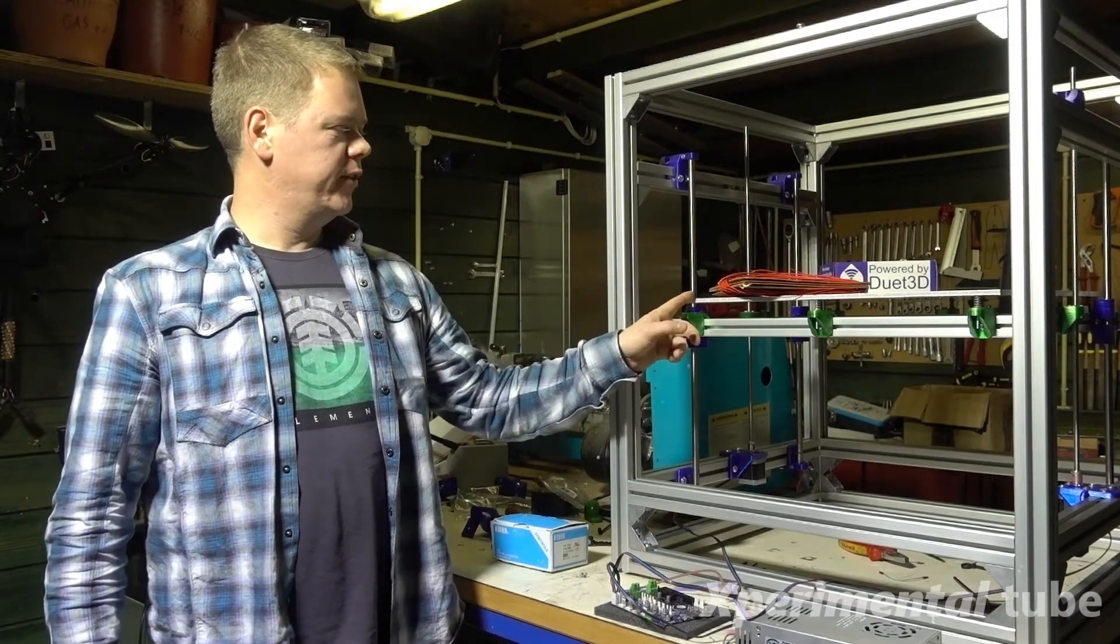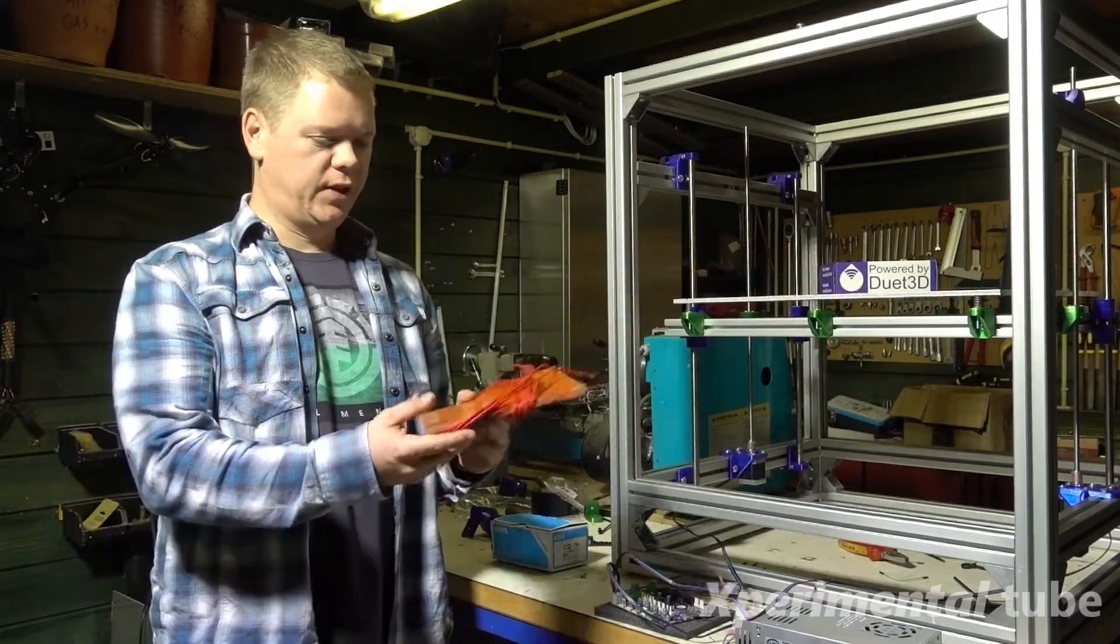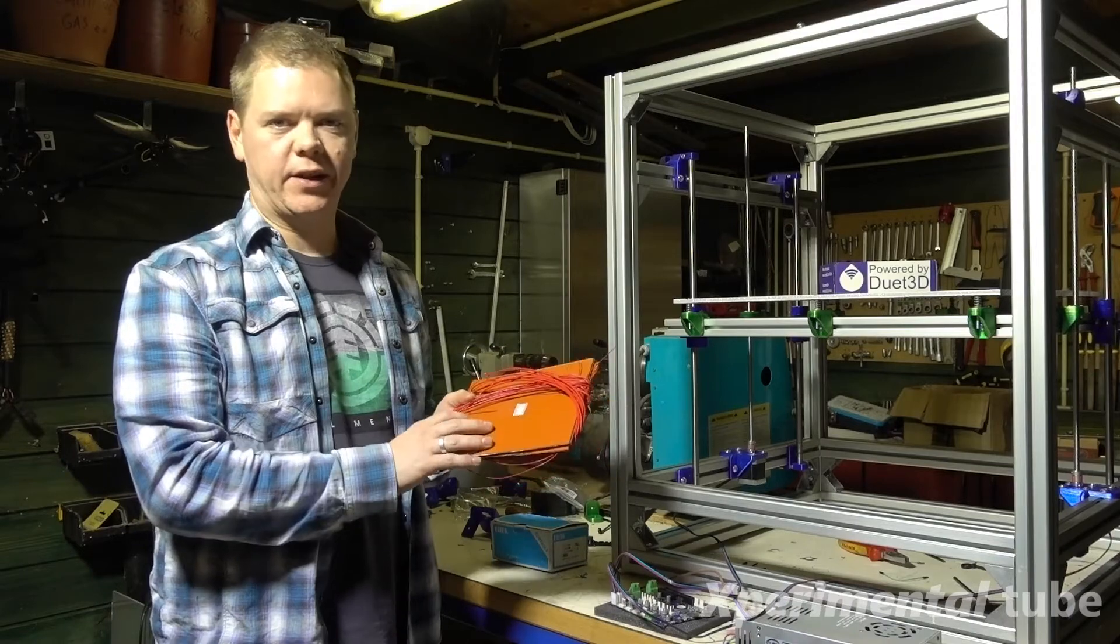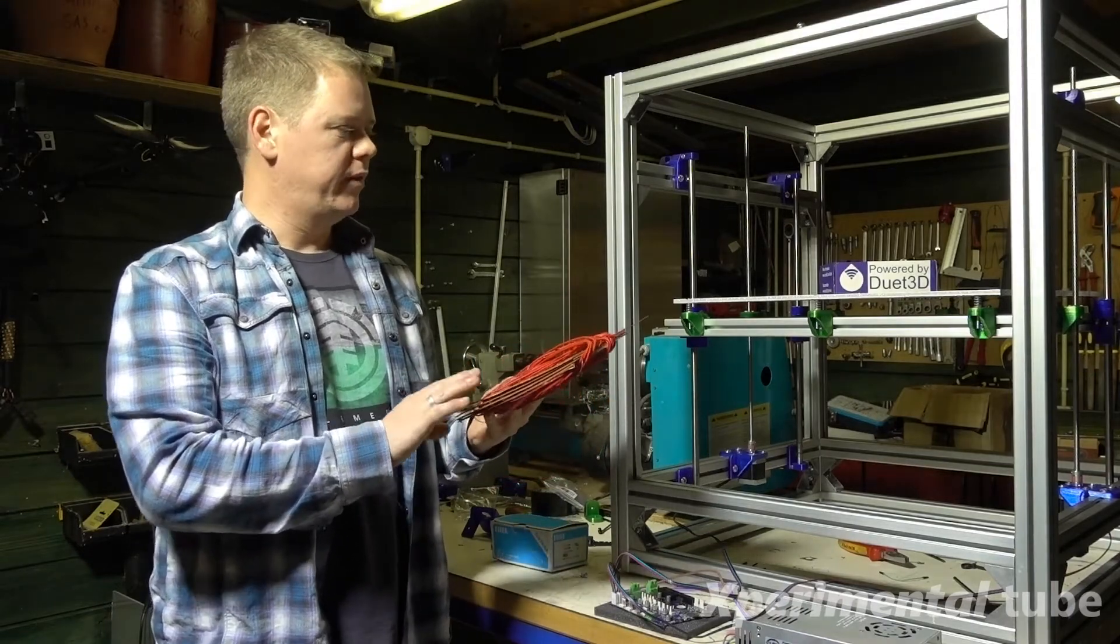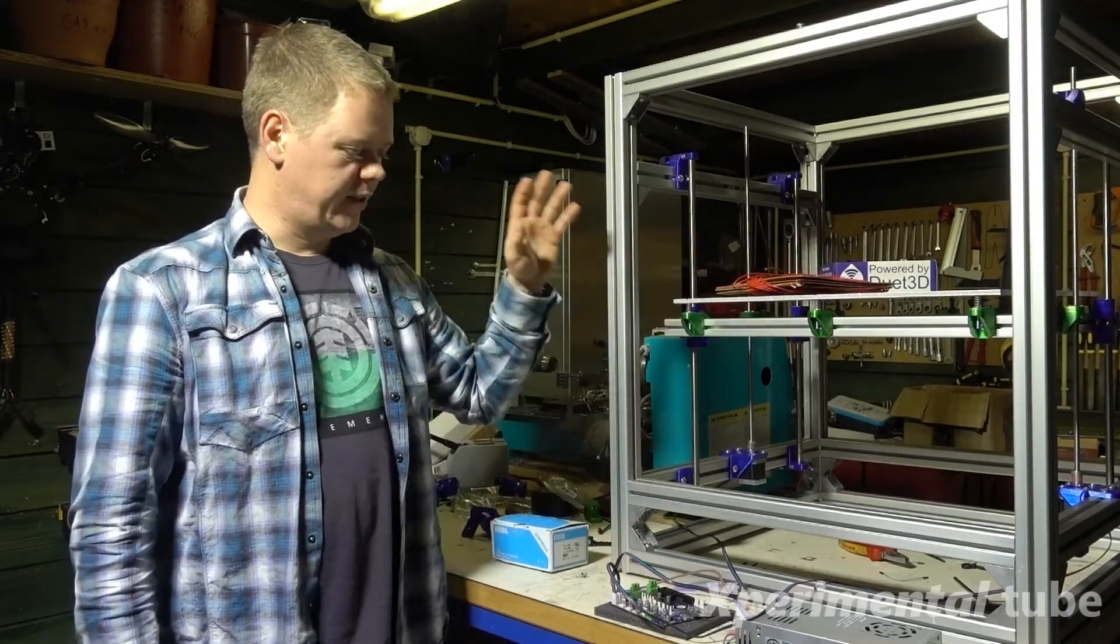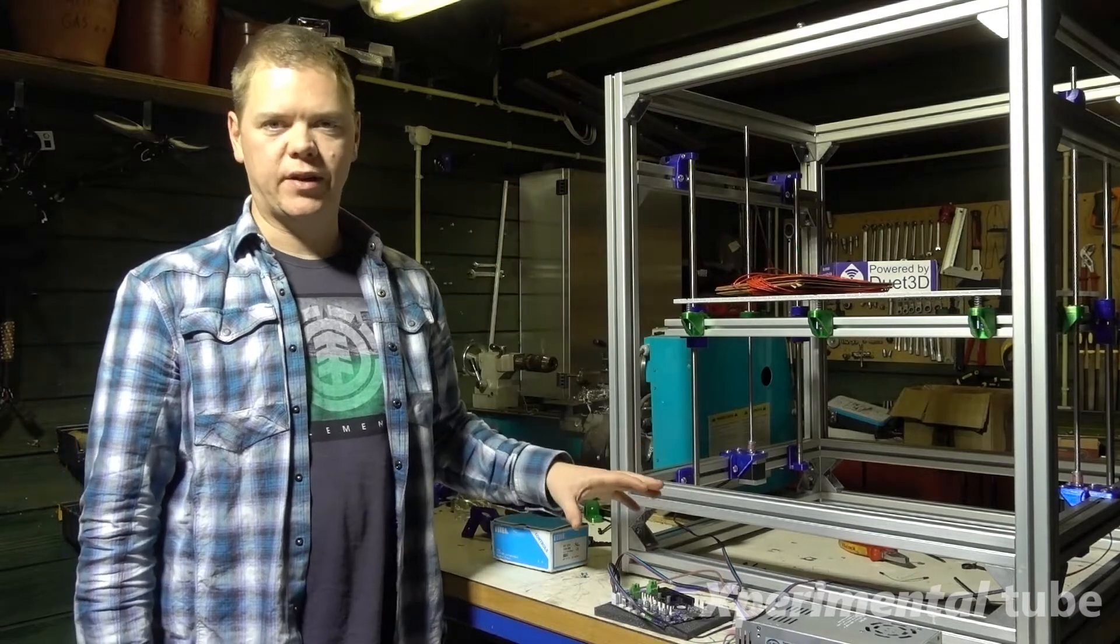So for the Hypercube build, I will be using these silicone heater mats. These are fed from the grid, so we need something to separate the duet wifi from the grid.